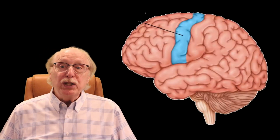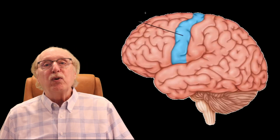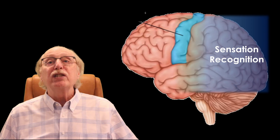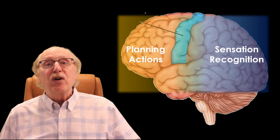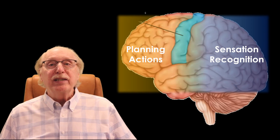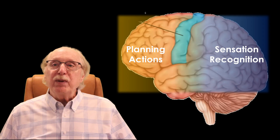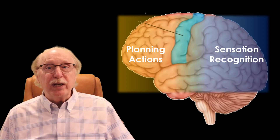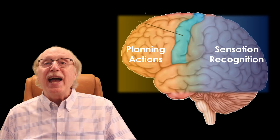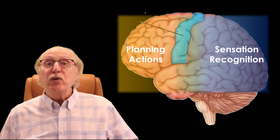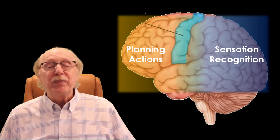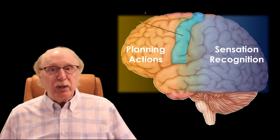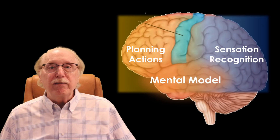We can roughly split human thinking into two broad areas: recognizing things and situations in our surroundings and then acting on that recognition. This can be thought of as querying our current store of knowledge to detect things we can recognize and also adding to that knowledge store the new things we don't recognize. These processes also allow us to build an internal mental model of our surroundings.